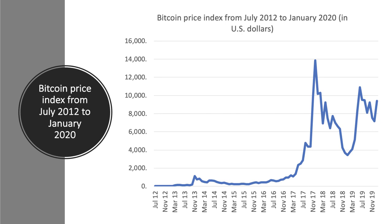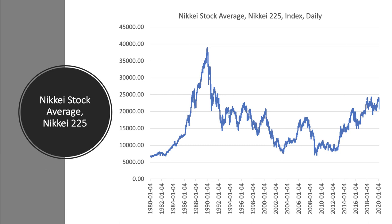More recently, looking at the bitcoin price from July 2012 to January 2020, the price of the cryptocurrency went up 20 times in 2017. But then the bubble burst — it lost 85% of its value in 2018. It has recovered a bit since, but the price remains well below its bubble peak.